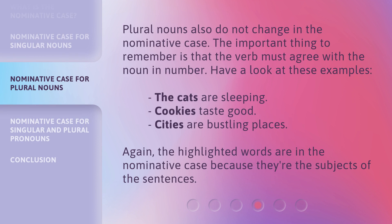Plural nouns also do not change in the Nominative Case. The important thing to remember is that the verb must agree with the noun in number. Have a look at these examples: 'The cats are sleeping.' 'Cookies taste good.' 'Cities are bustling places.' Again, the highlighted words are in the Nominative Case because they're the subjects of the sentences.